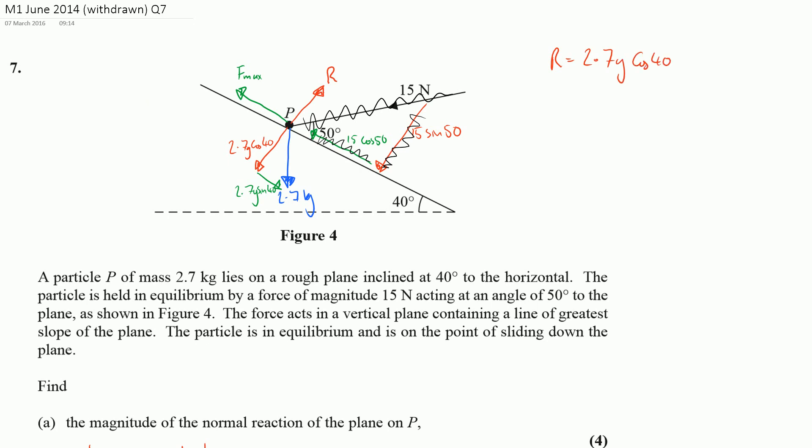In this case, R will be equal to 2.7 G cos 40, and I'm going to need to look at what the maximum value friction could take would be. So thinking about F max, which would be equal to mu times R, that would be 0.232, as we got from our part B, times by this 2.7 G cos 40.